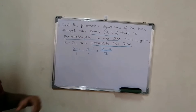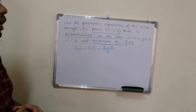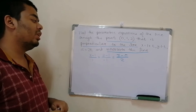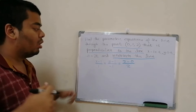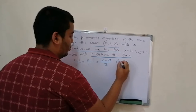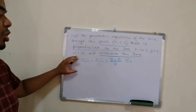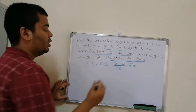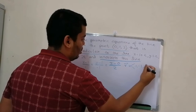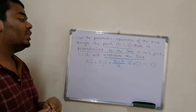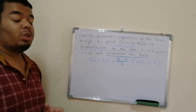Our line must be perpendicular to this line. We need to find the direction vector of the given line. As mentioned previously, for a line in symmetric form, the direction vector is given by the denominators, so the direction vector is (1, -1, 2). Since we cannot directly find the equation of the perpendicular line, we will first find the equation of the plane that is perpendicular to this line.